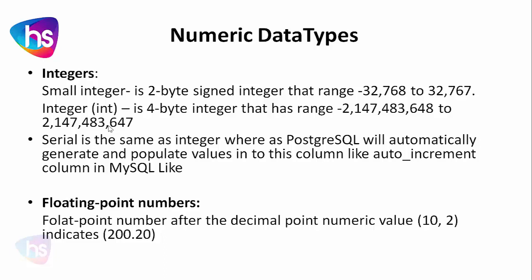SERIAL is the same as INTEGER, except PostgreSQL will automatically generate and populate a value for that column. Like in other RDBMS databases such as MS SQL and MySQL, there is an auto-increment column where the number automatically increments by plus one, plus two, or whatever range is given, on every row.